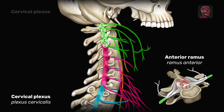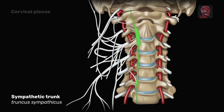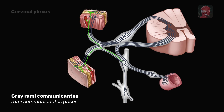The cervical nerves within this plexus are intertwined with each other in such a way that each inferior nerve receives fibers from the superior one. For instance, C3 receives fibers from C2, C4 receives fibers from C3, and so on. These communicating fibers are branches of the sympathetic trunk and are also called grey rami communicantes.